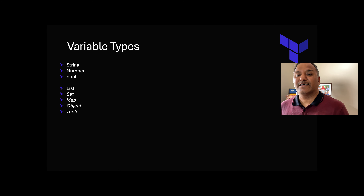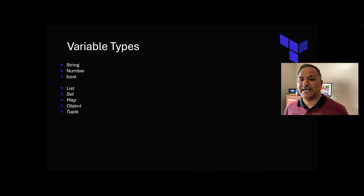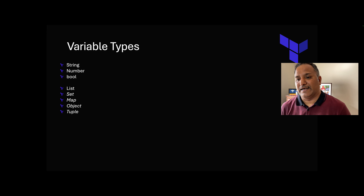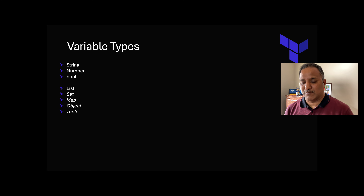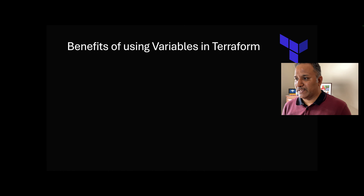The next thing is about the types of variables. In this example we looked at only the string type, but Terraform also supports other simple types like numbers and boolean, and complex types like list, set, map, object, and tuple. In future videos we would probably explore some of these depending on different use cases.